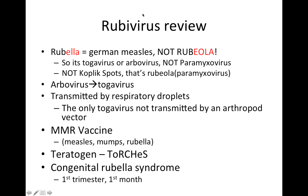Here's a review of rubella. Rubella is German measles — not regular measles. It falls within togavirus and arbovirus, not paramyxovirus. It's not Koplik spots — that's rubella — it's erythematous rash. It's transmitted by respiratory droplets, and remember this is the exception to the arthropod vector rule: it's the only togavirus not transmitted by an arthropod vector.